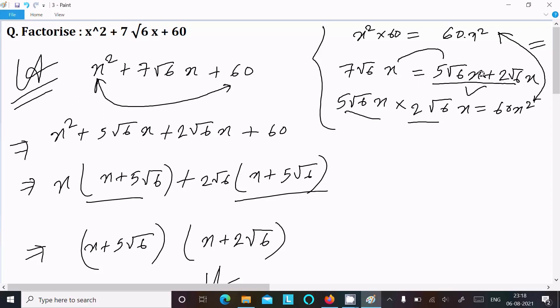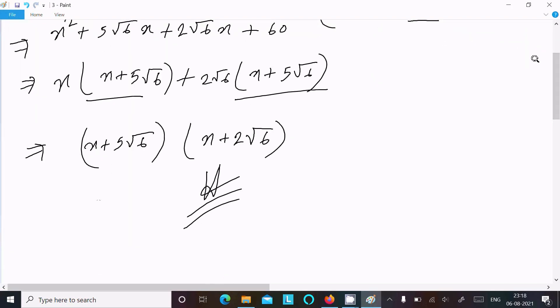When that condition is matched, then you should write that one in place of 7√6x and take the common. Then you can get your correct factorization. So this is the way we can do the factorization of this question.